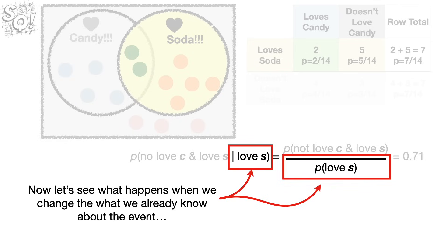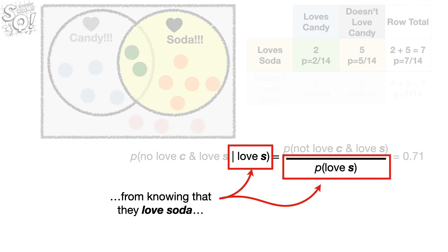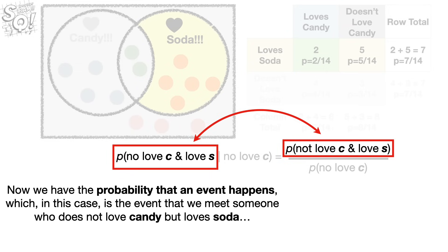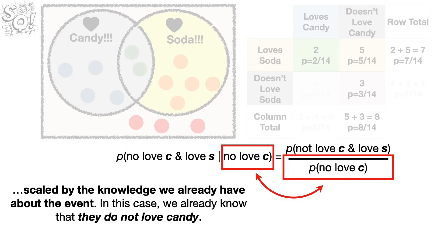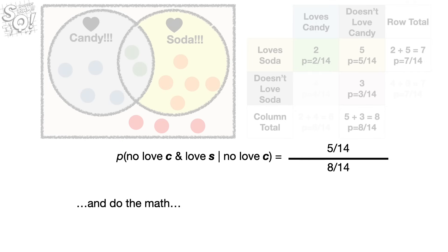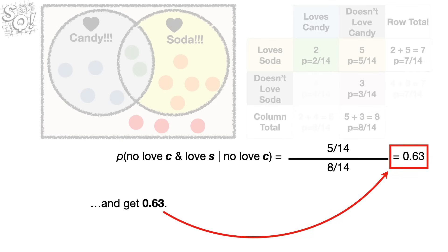Now let's see what happens when we change what we already know about the event — from knowing that they love soda, to knowing that they do not love candy. Now we have the probability that an event happens — in this case, the event that we meet someone who does not love candy but loves soda — scaled by the knowledge we already have about the event. In this case, we already know that they do not love candy. Now we plug in the numbers and do the math, and get 0.63.